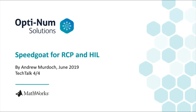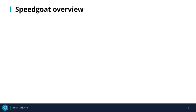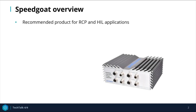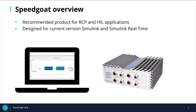Hey there. In this final installation on Tech Talks about real-time simulation, we will look at how Speedgoat is used to apply real-time simulation in industry. Speedgoat provides target machines that are capable of real-time simulations for RCP and HIL, meaning that these machines can act as both a virtual plant or virtual controller. They are specifically designed for use with Simulink and Simulink Real-Time and are compatible with the latest MathWorks releases.